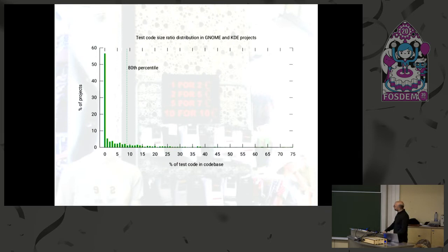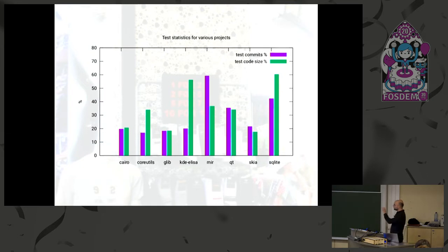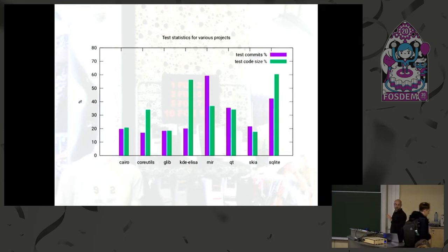I got similar results for the test code size ratio. I also compared against other projects I knew were better tested, just to have something to compare to. You can see the metrics are much better for those projects, which is a good sign that our metrics are actually working correctly.